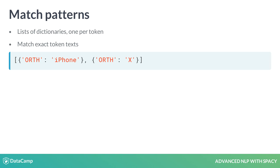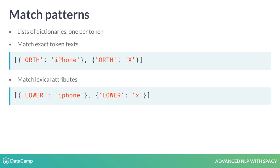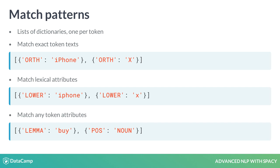In this example, we're looking for two tokens with the text 'iPhone' and 'X'. We can also match on other token attributes — here, we're looking for two tokens whose lowercase forms equal 'iPhone' and 'X'. We can even write patterns using attributes predicted by the model, matching a token with a lemma 'buy' plus a noun. The lemma is the base form, so this pattern would match phrases like 'buying milk' or 'bought flowers'.